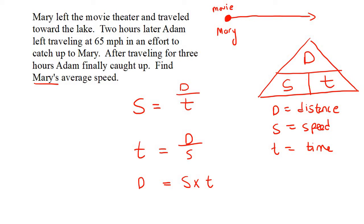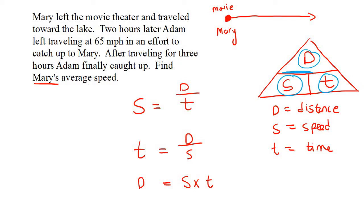I'll quickly run through it once more. We know that S is over here — if you look at D and T, they're almost making a divide sign, so S equals D over T. Then if we look at T, T is equal to D over S. And if you look at D, D is at the top, so S and T are next to each other and we multiply them. Those are the basics we need to know.